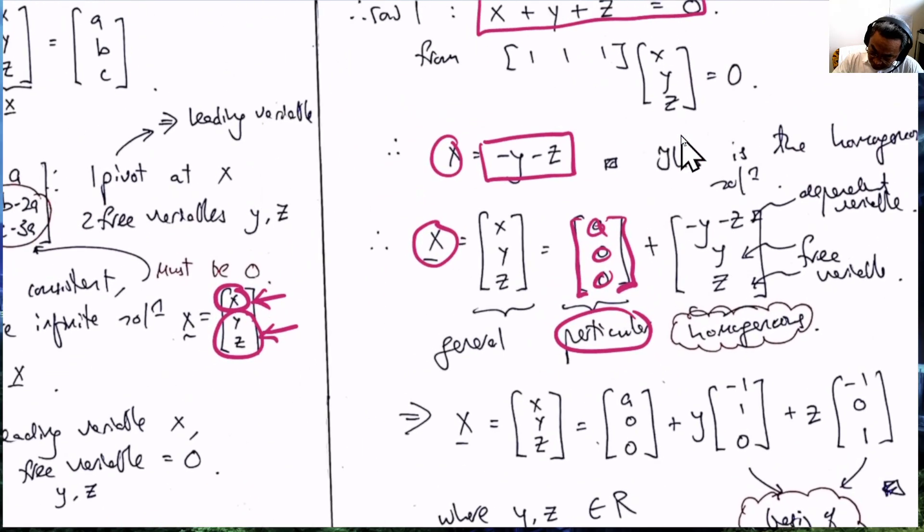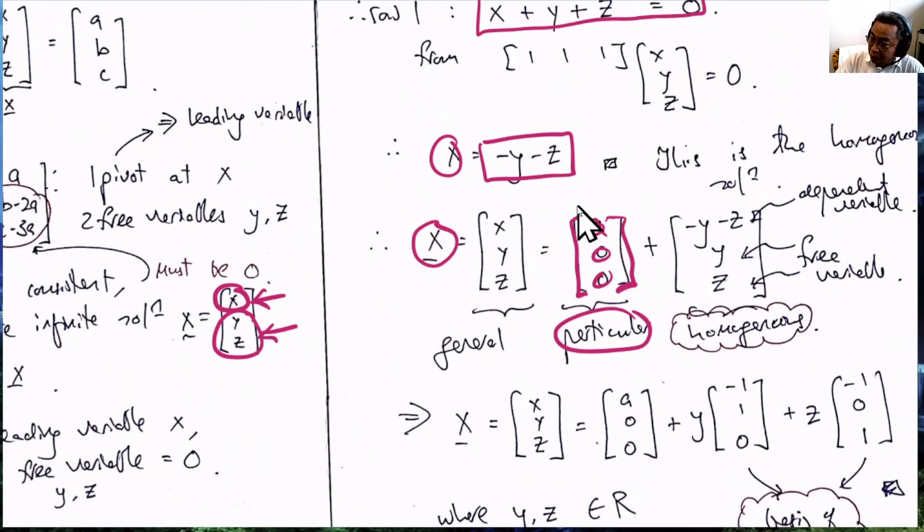And now for the second part, what we do is that we use this equation for the homogeneous solution and we say that X equals minus Y minus Z. So we put this is X, the first element of the unknown variable X. Y and Z are free variables, so we just retain this.